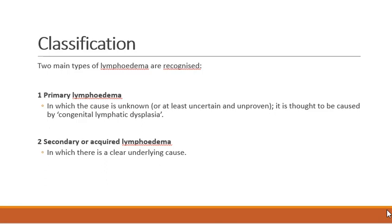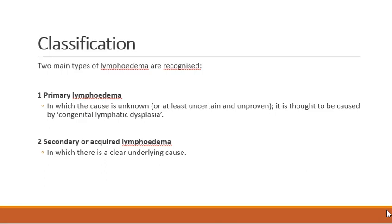In primary lymphedema the cause is unknown — it is thought to be caused by congenital lymphatic dysplasia. In secondary lymphedema there is a clearly identifiable underlying cause. Primary lymphedema is further subdivided into three types based on the presence of family history, age of onset, and lymphangiographic findings.